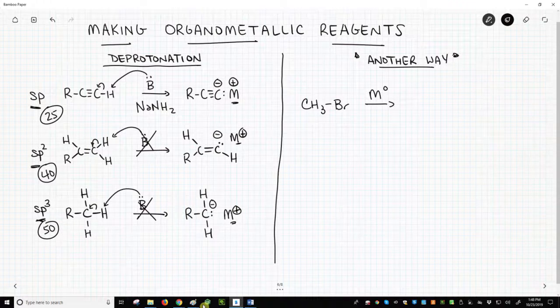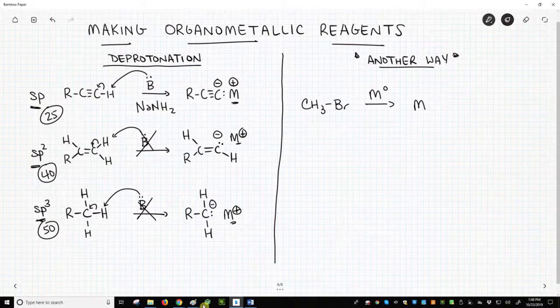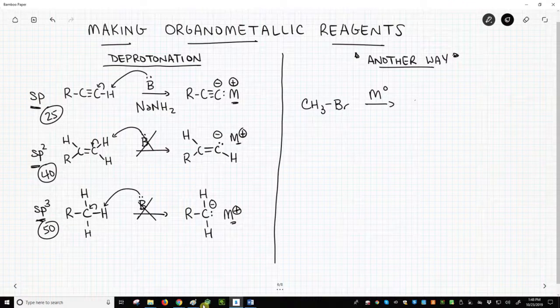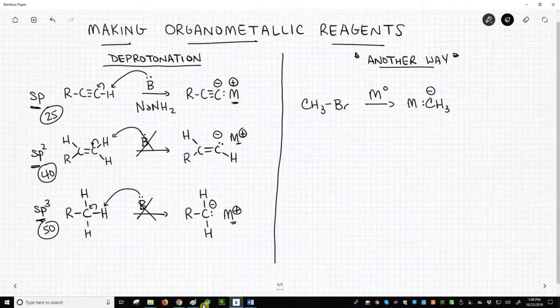the metal donates its electrons to both the carbon and halogen, bromine, and we get a carbanion. Whoops. We get a carbanion, a lone pair on carbon, and a metal cation.